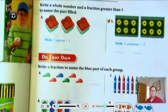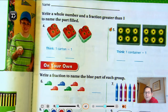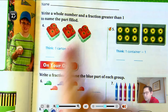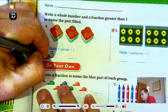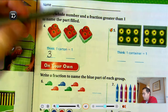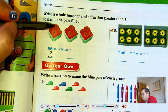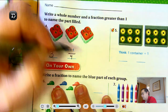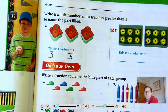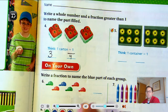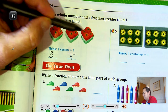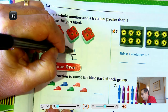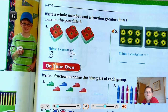Number 4: Write a whole number and a fraction greater than 1 to name the part filled. Each of these cartons is one whole. How many cartons of tomatoes do we have? We have 3. Each carton is broken into 4 tomatoes. So how many total tomatoes do we have? 4, 8, 12. So 12 one-fourths — each tomato would be 1 fourth of the total.